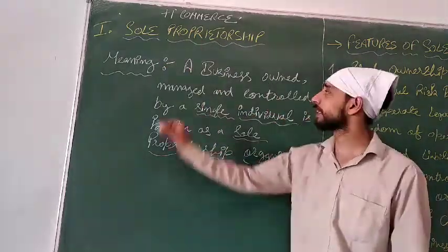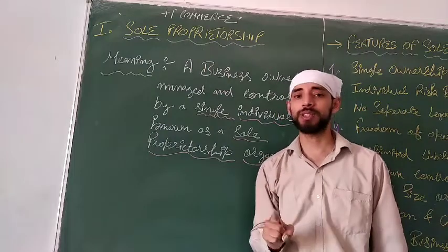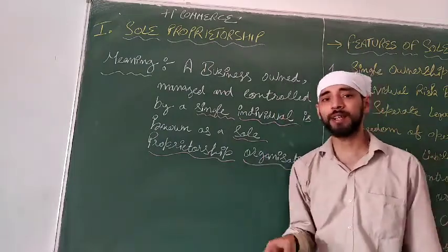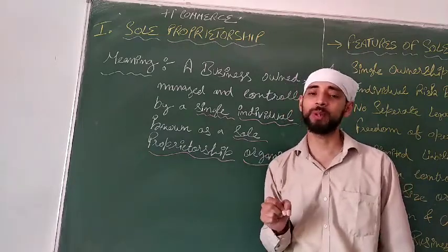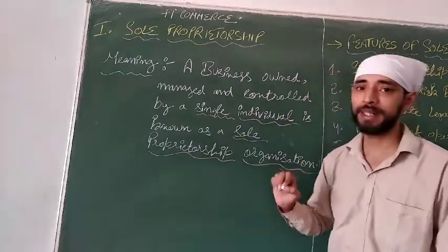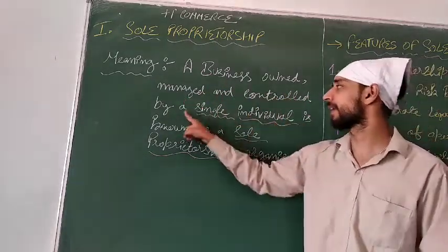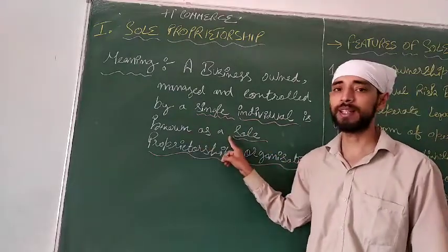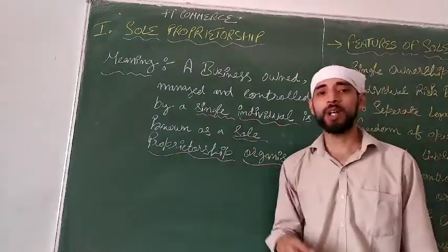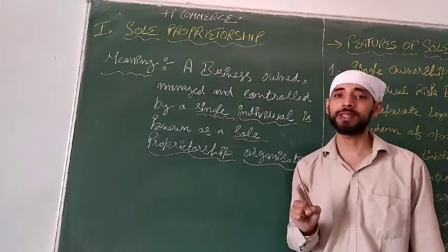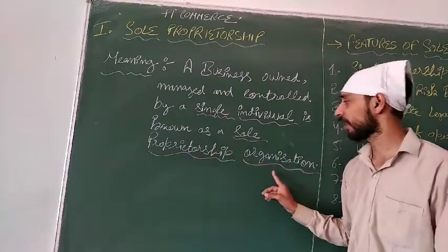Sole means single, and proprietorship means ownership — that means single ownership. If any business is started by a single person, it is called a sole proprietorship. A business owned, managed, and controlled by a single individual is known as a sole proprietorship organization or firm.